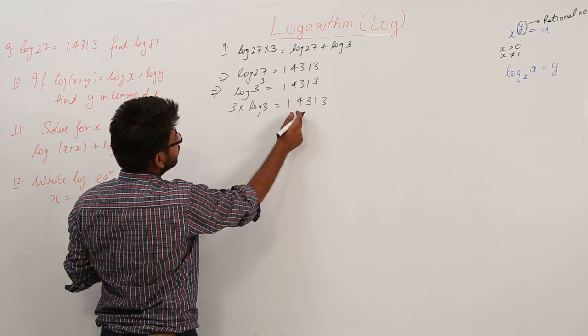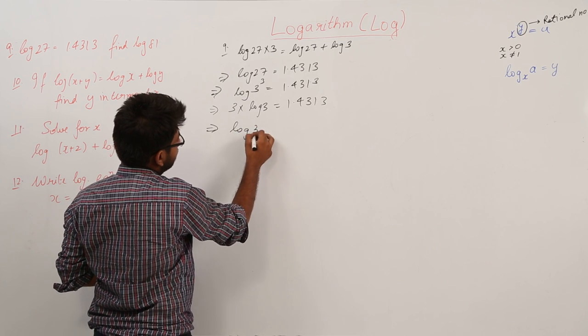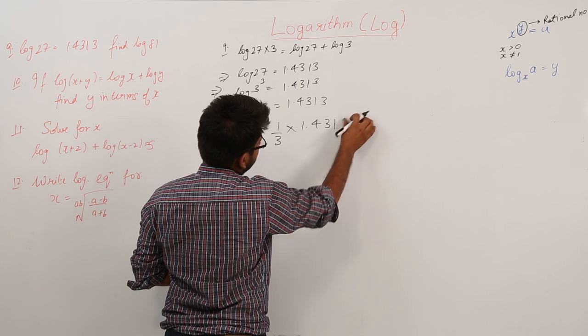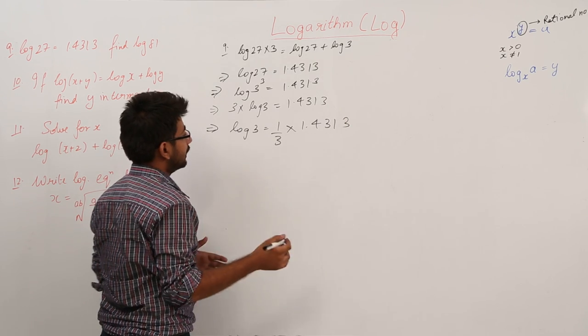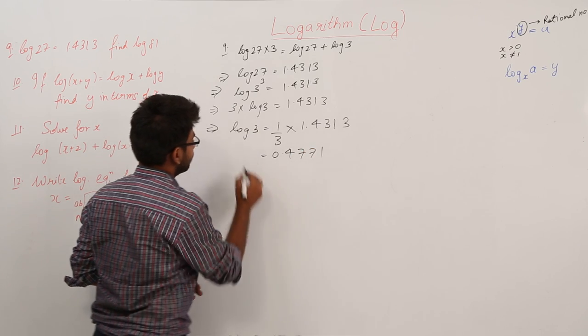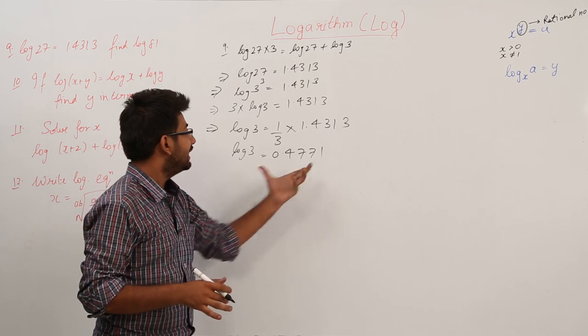So when this 3 is taken to that side, it becomes log 3 is equal to 1.4313 divided by 3. So when we will solve this, the answer would be 0.4771. That means the value of log 3 is equal to 0.4771.